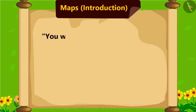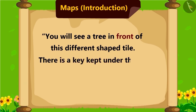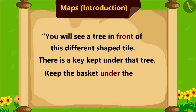Children, can you identify what is the shape of the tile? You will see a tree in front of this different shaped tile. There is a key kept under that tree. Keep the basket under the tree, take the key, and turn right.